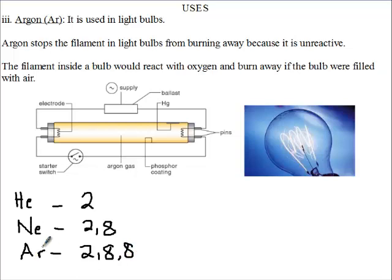Now it is used in light bulbs. Remember we said Argon makes up about 0.9% of the air that we breathe or the air around us. It is used in light bulbs. Argon is unreactive, so it stops the filament in light bulbs from burning away.